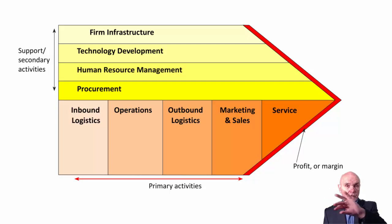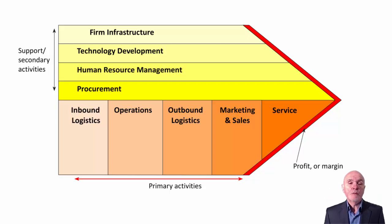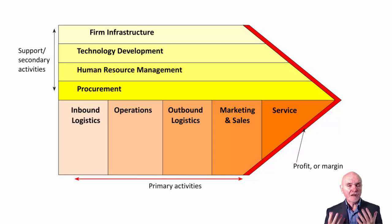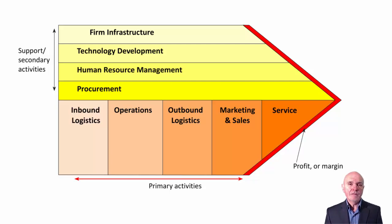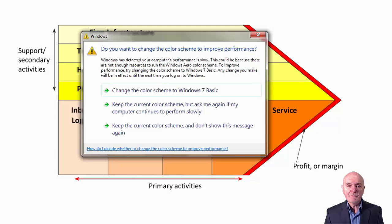Going across the top of the diagram, we have what Porter called the support or secondary activities. To some extent, these are a bit like fixed costs or fixed overheads — they're going to be carried on irrespective of the volume being manufactured at any particular time.